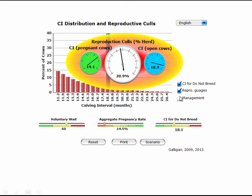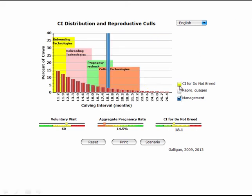We can look at the management factors that are involved in terms of controlling this distribution of calving intervals. And rebreeding technologies are going to really determine what animals are first inseminated here. What is your breeding technology? And rebreeding is going to determine who is open and gets rebred as quickly as possible in combination with pregnancy checking to ensure that these occur very quickly. And then you have culling technologies that determine when to stop the tail of the animal.